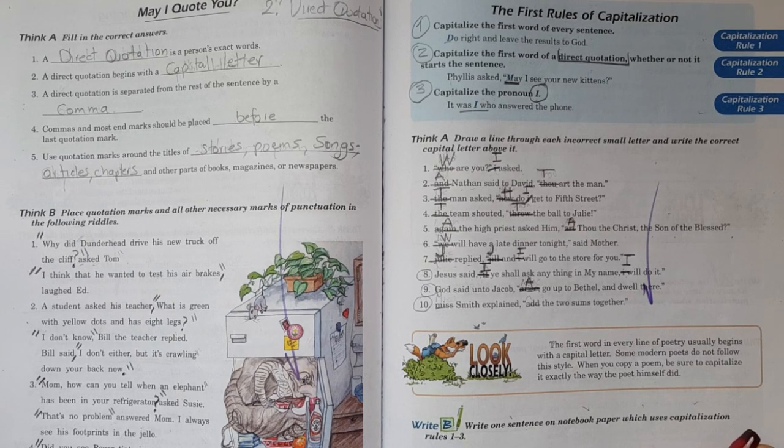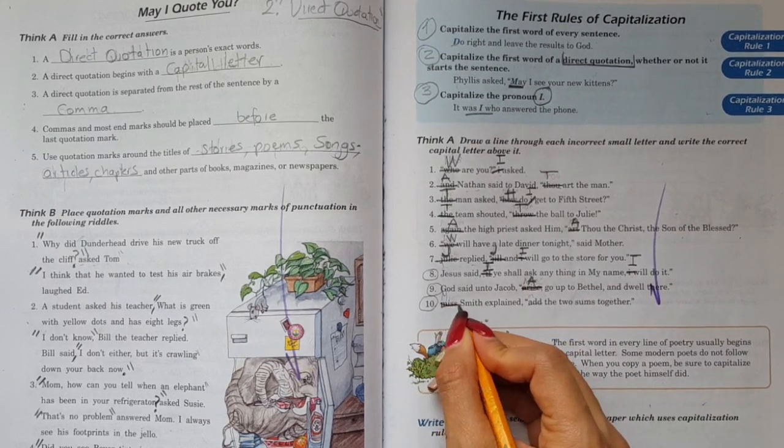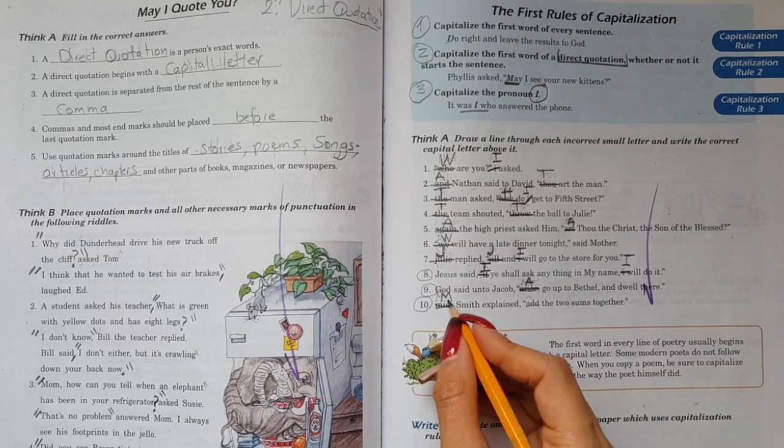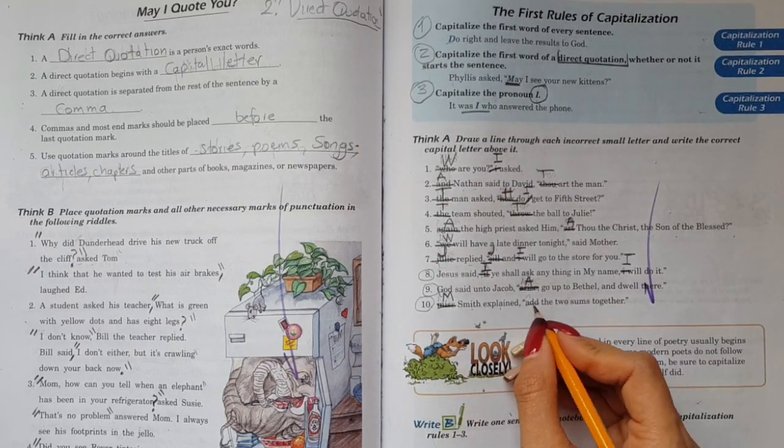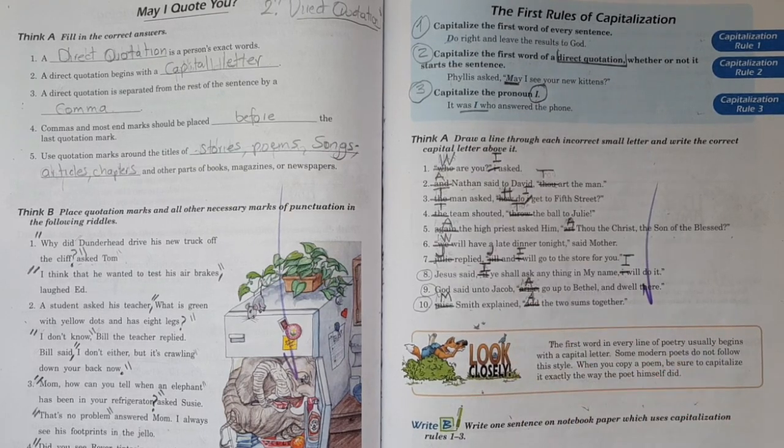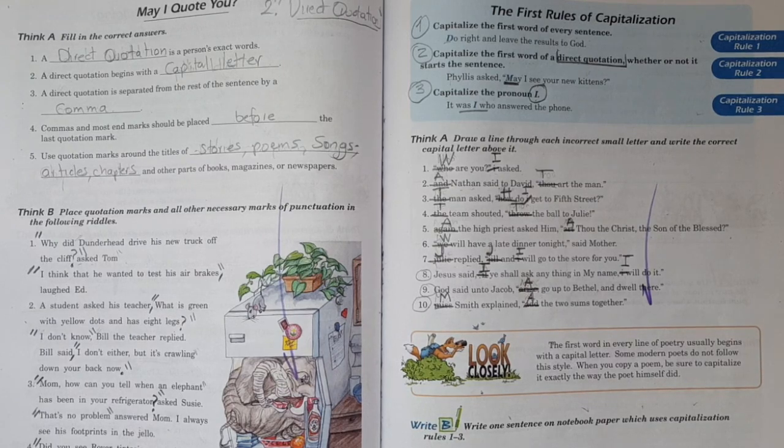Number ten. Mrs. Smith explained. Listen up, we have that in the beginning of the sentence, the capital letter M. Mrs. Smith explained, at - I'm crossing and I'm going to put a capital A. Add the two sums together. Very good.